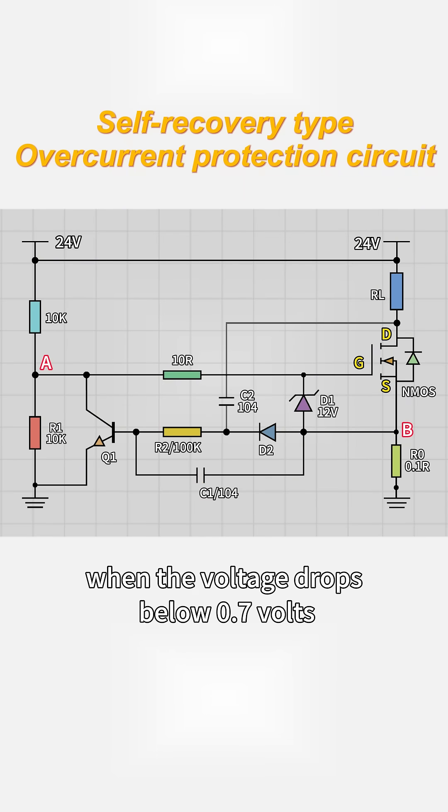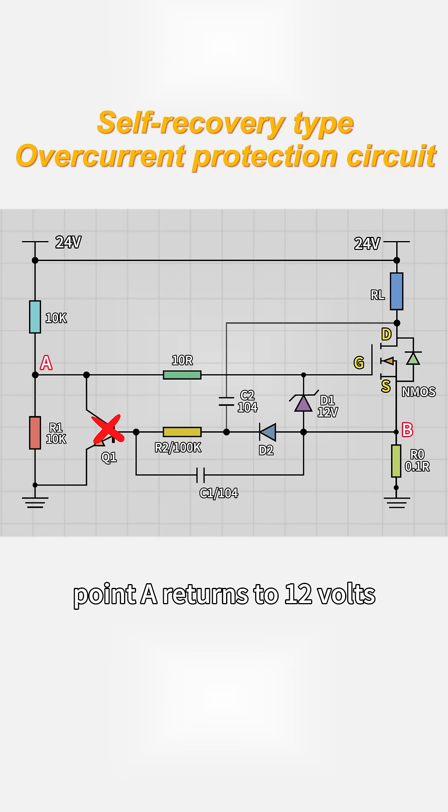After a while, when the voltage drops below 0.7V, the transistor turns off, point A returns to 12V, and the MOSFET conducts again.